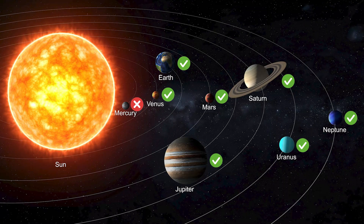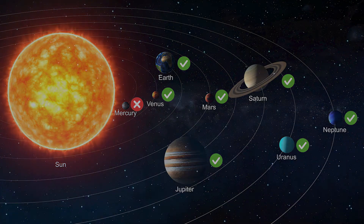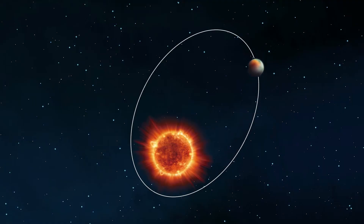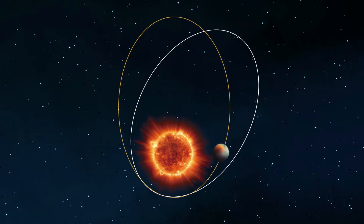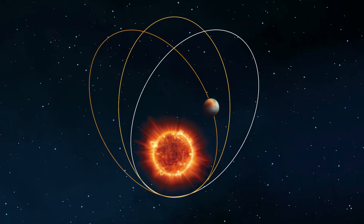Its orbit was off. As Mercury traveled around the Sun, its elliptical orbit shifted over time, creating a wobble in its path. Newton's laws could predict most of this shift, but not all of it. The math was off by a tiny amount, but in science, even small inconsistencies matter.